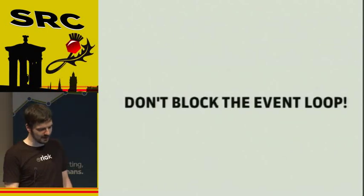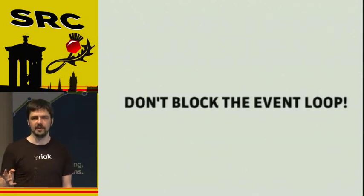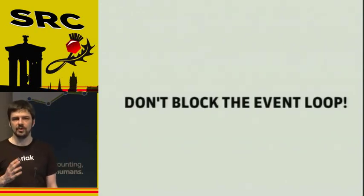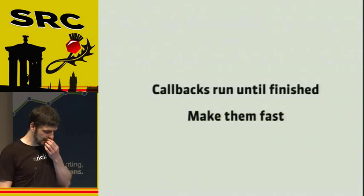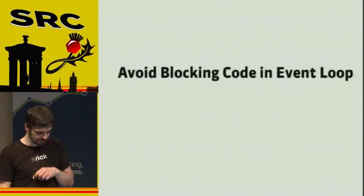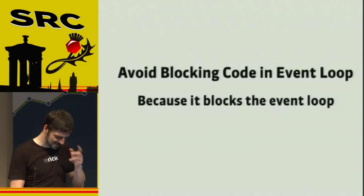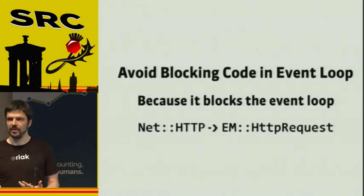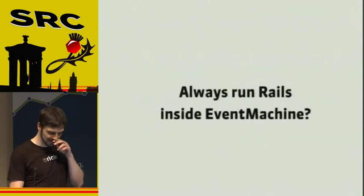There are always caveats. Don't block the event loop — whatever you do, don't block the event loop. Make your processing fast and let the event loop just flow. If you have something that needs to be longer running, push it out to some other backend — just push it to Rescue, RabbitMQ, whatever — but don't block the event loop, because callbacks run until finished and you want to make them fast. Stop using the Ruby default libraries for any kind of network IO. Instead of Net::HTTP, use EM HTTP Request, for example.